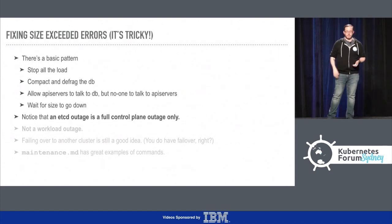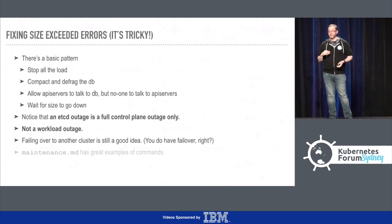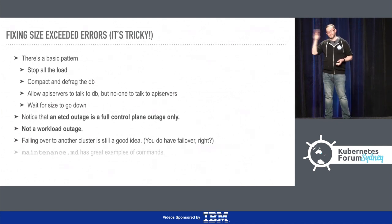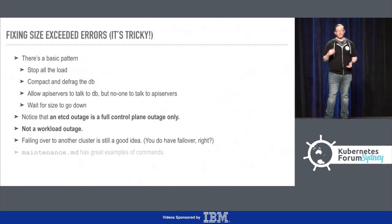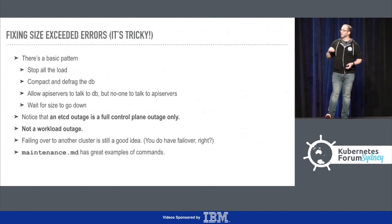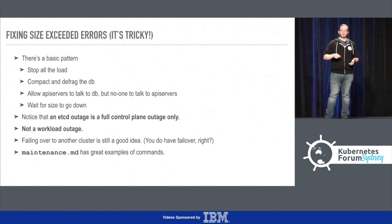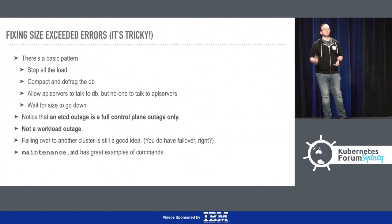It was not a workload outage. Failing over to another cluster is a good idea if you can - hopefully you have failover, and if you don't, good luck to you. In the etcd repo, there's a maintenance.md that has really great examples of how it can help you fix this. The runbook that one of the guys ended up writing literally took big cues from that document.